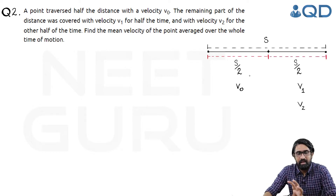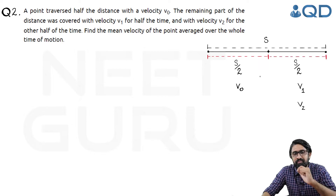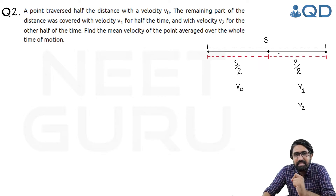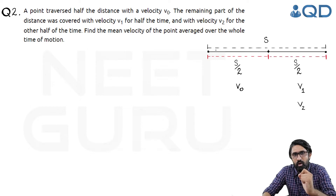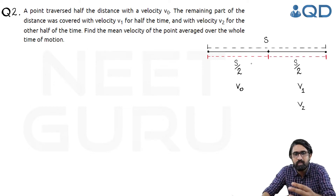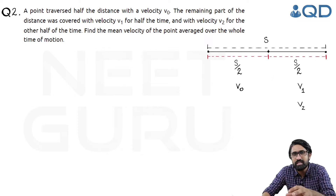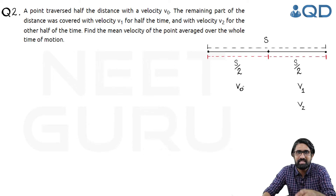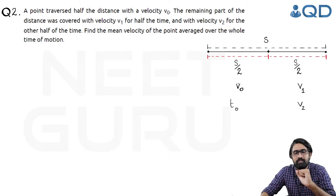We will explain this question with the help of a diagram. Imagine that the entire distance covered by the particle or the point is s. That distance is divided into 2 equal halves: s/2 and s/2. The first s/2 distance was covered with velocity v0, and a time t0 was taken for that process.